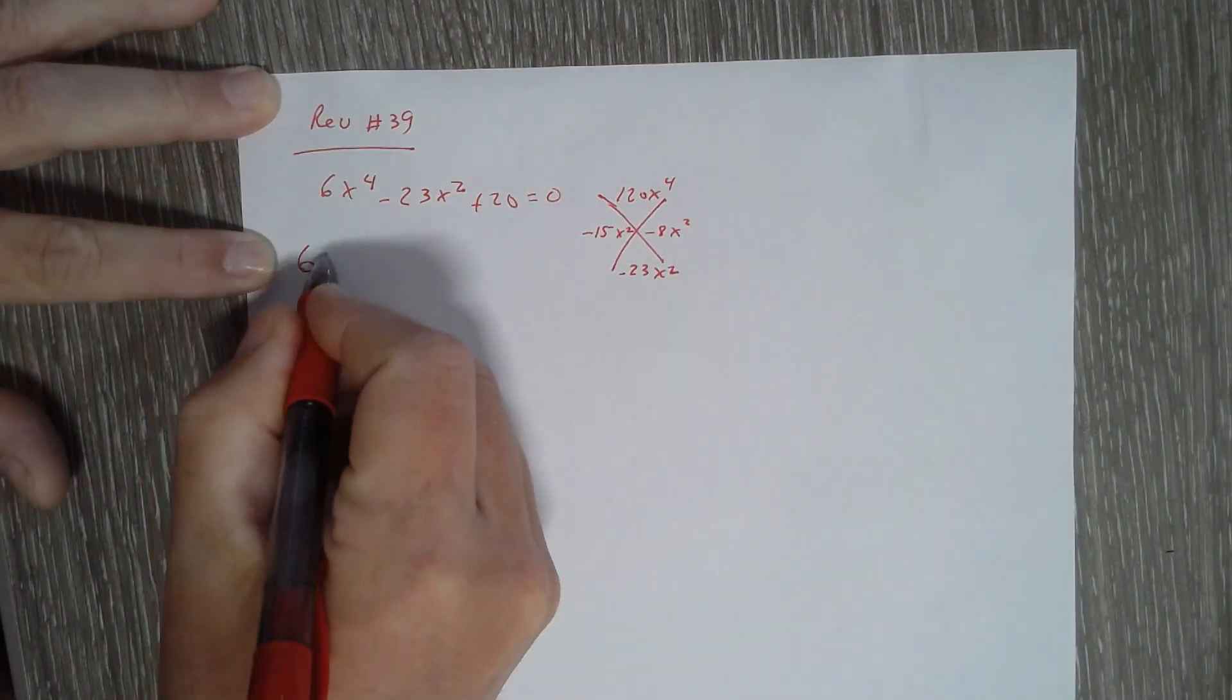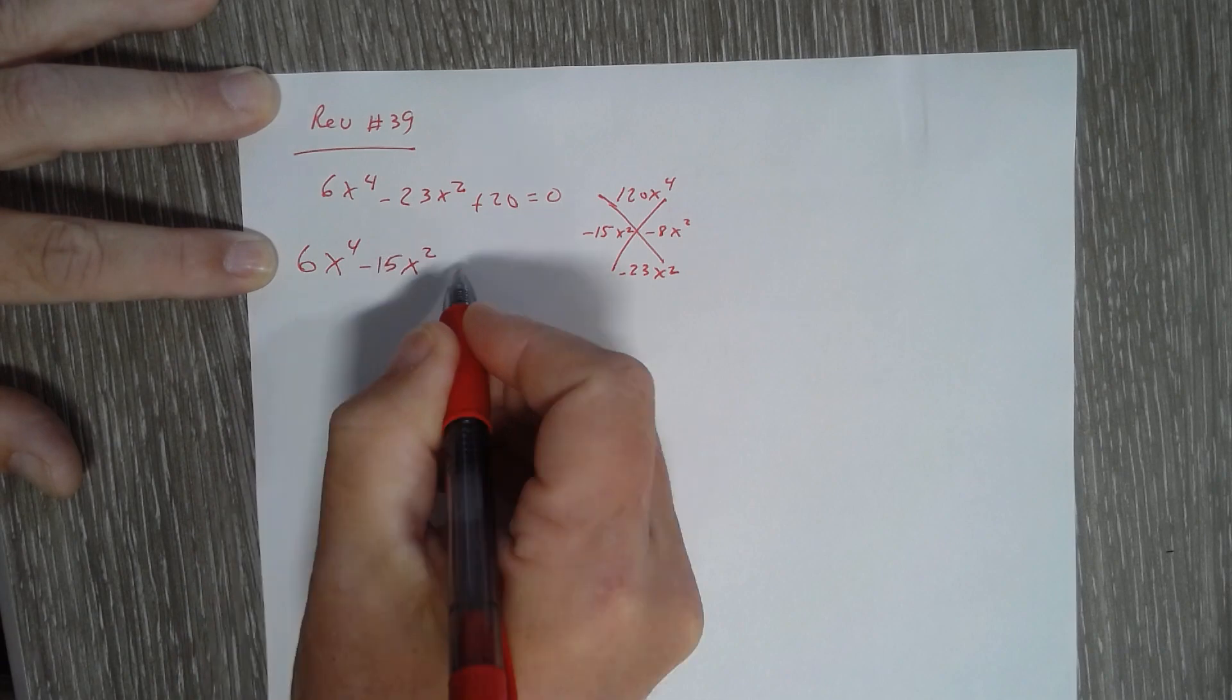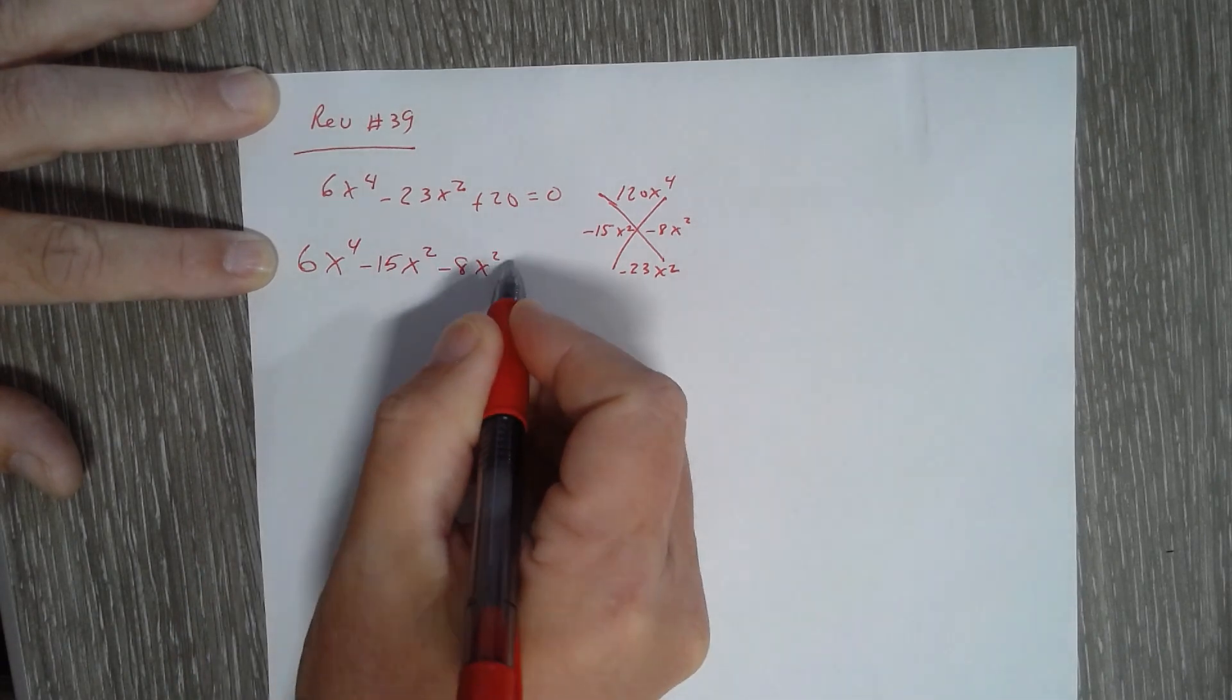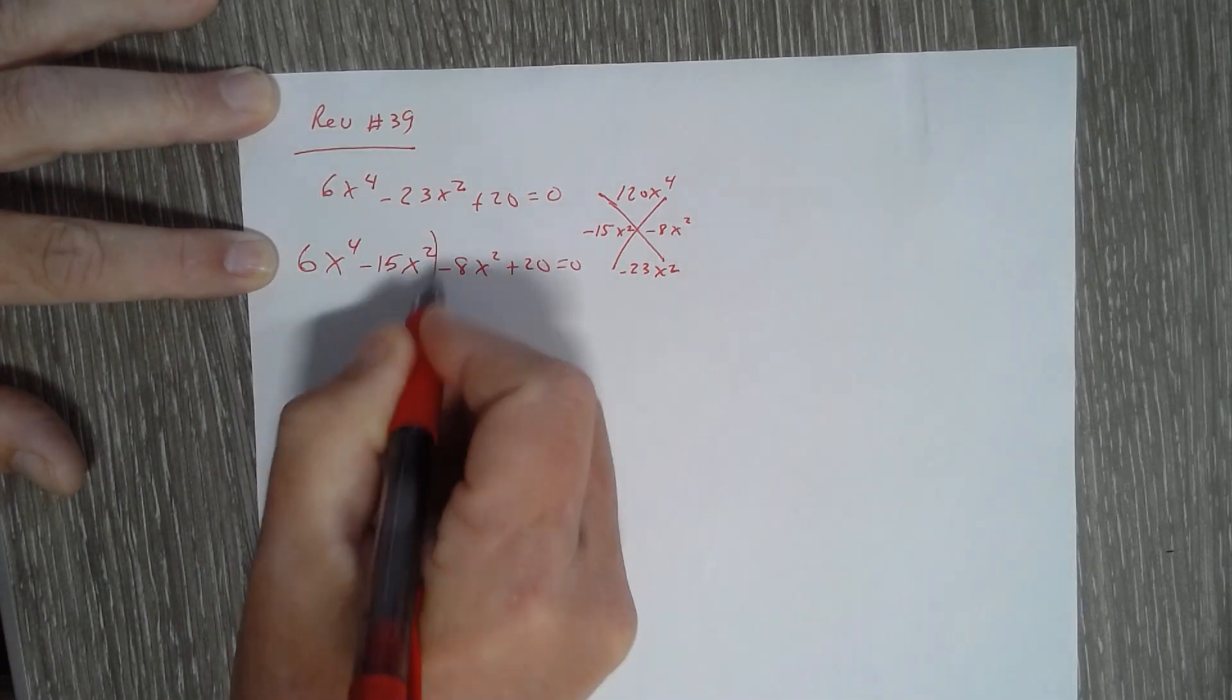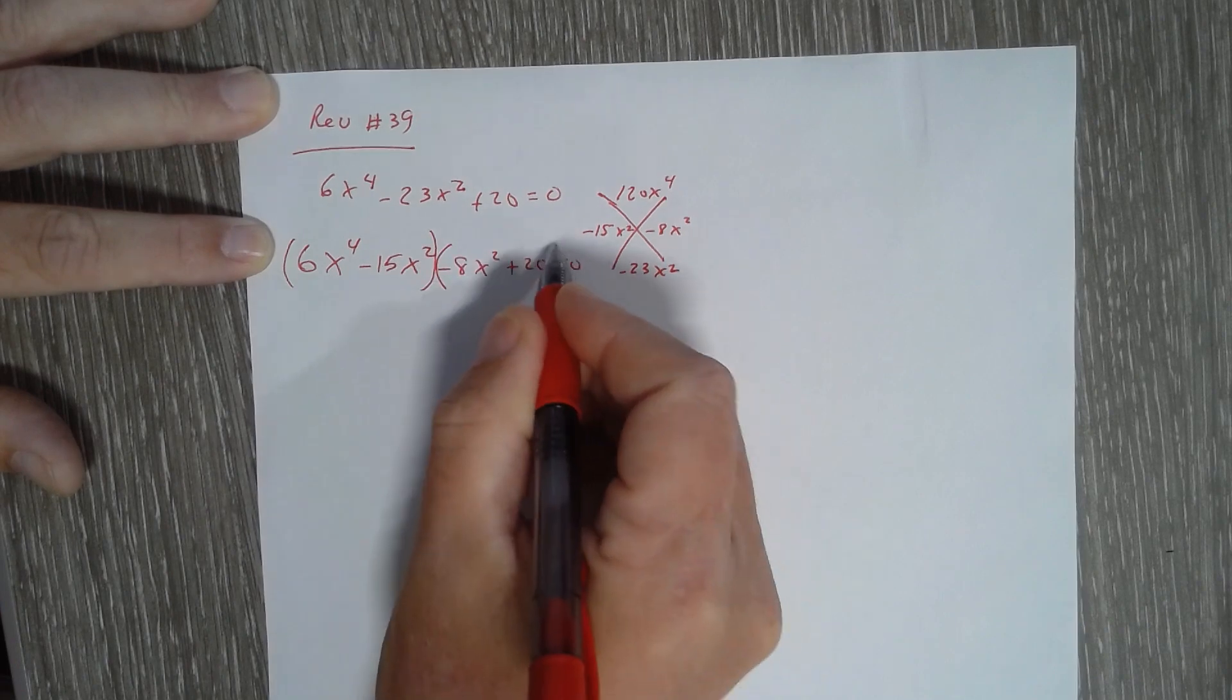So when I factor it, I get 6X to the fourth minus 15X squared minus 8X squared plus 20. Group the first two terms and the second two terms together.